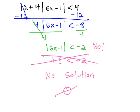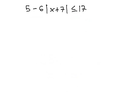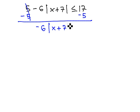Let's look at another problem. 5 minus 6 times the absolute value of x plus 7 is less than or equal to 17. We know to start solving, we must start getting the absolute value alone by subtracting 5 from both sides. This gives us negative 6 times the absolute value of x plus 7 is less than or equal to 12.